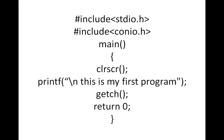Here you see clrscr. This is a function which is defined in conio.h — console input output header file. It clears the screen. Every statement is terminated by a semicolon, so after clrscr with brackets, we have to keep the semicolon.